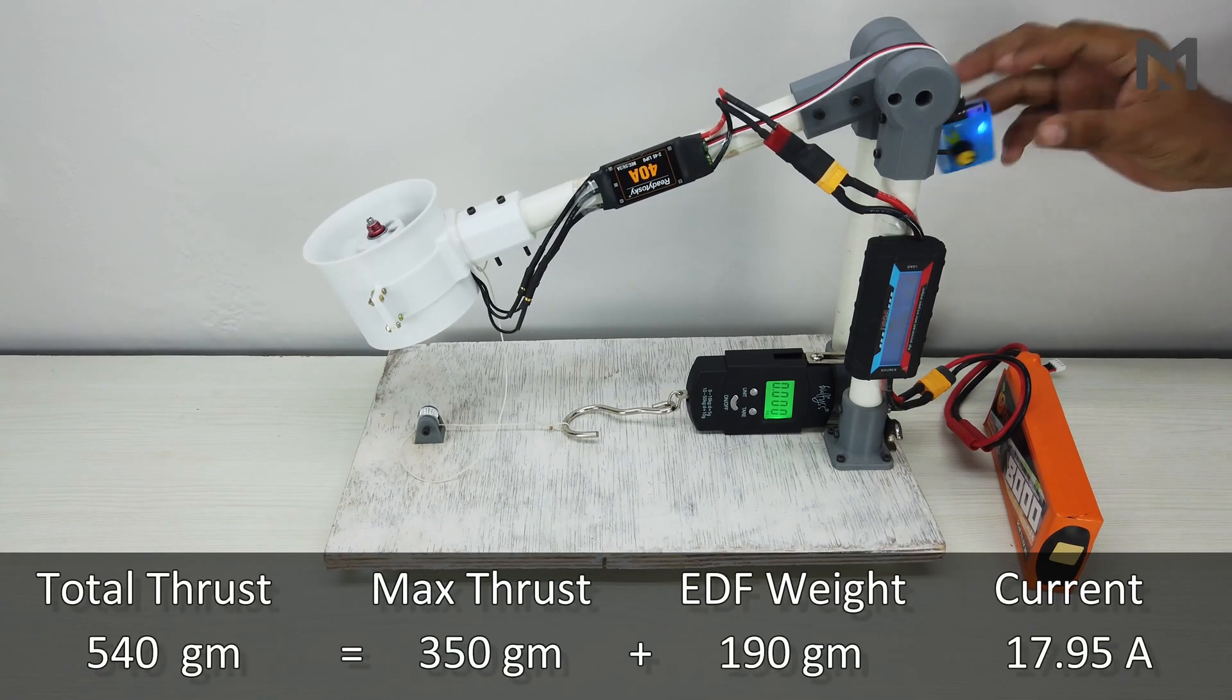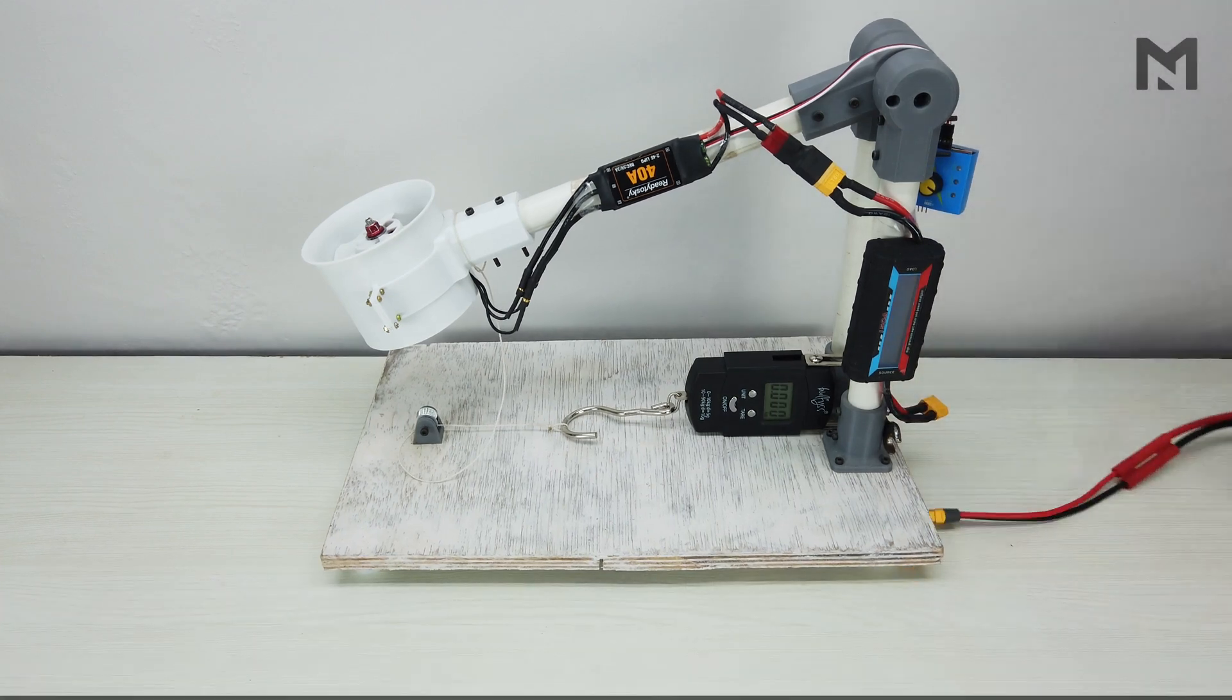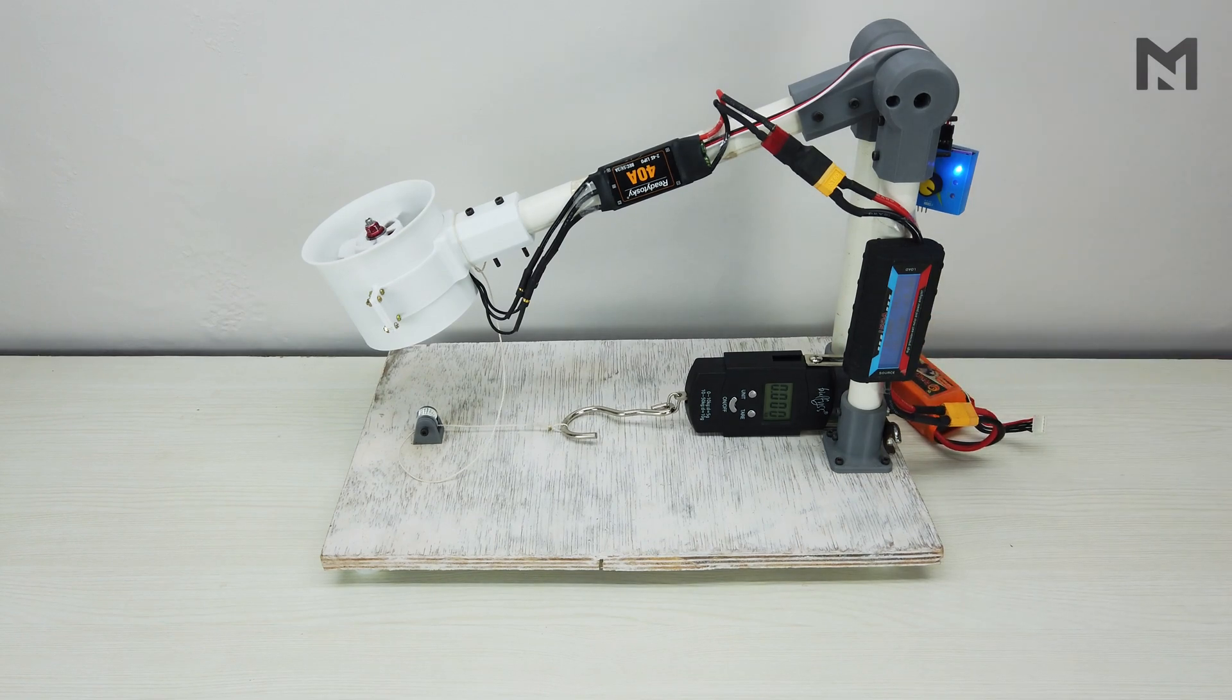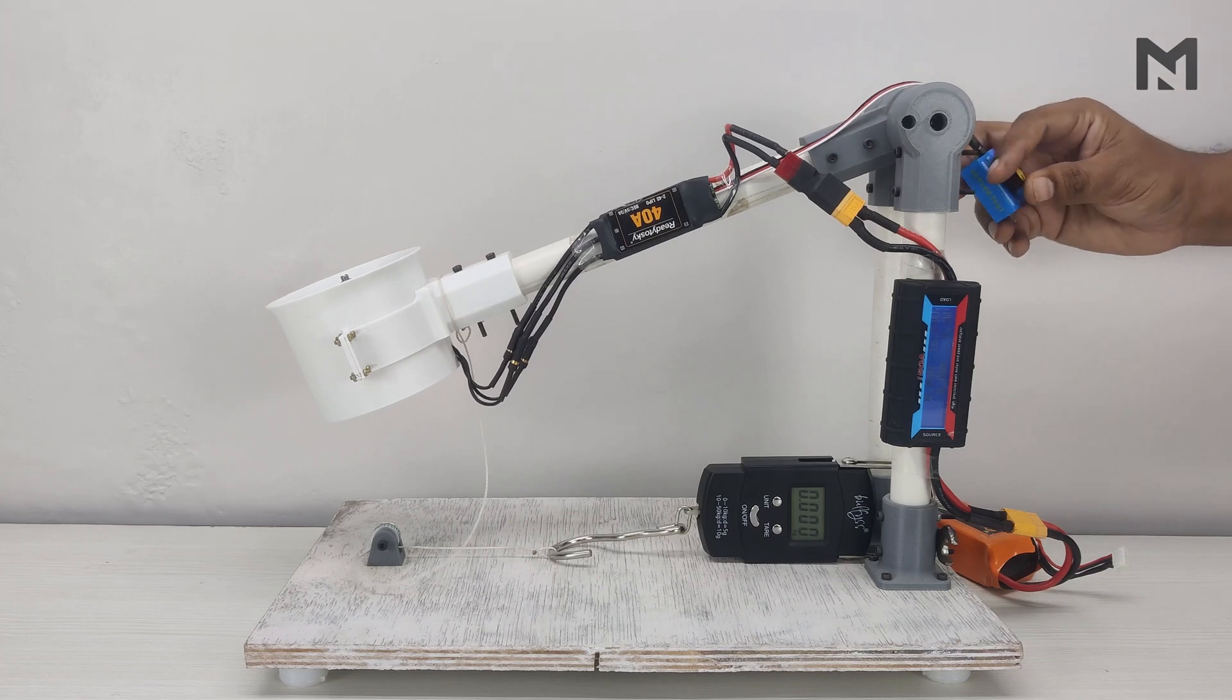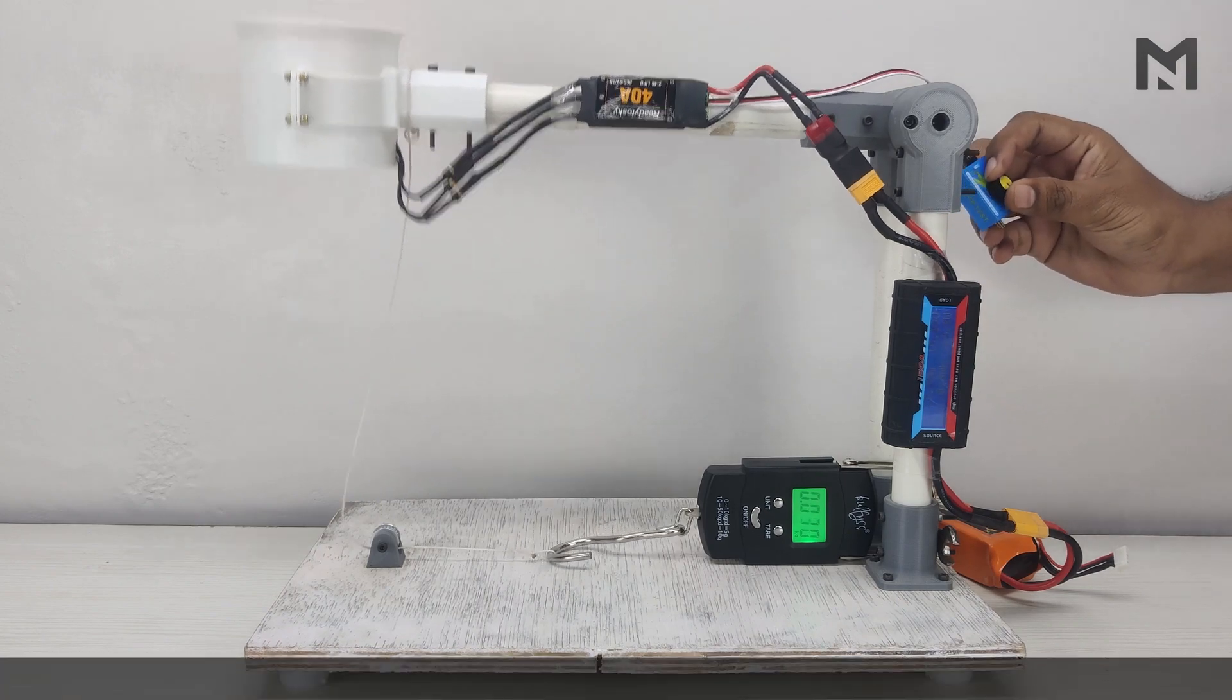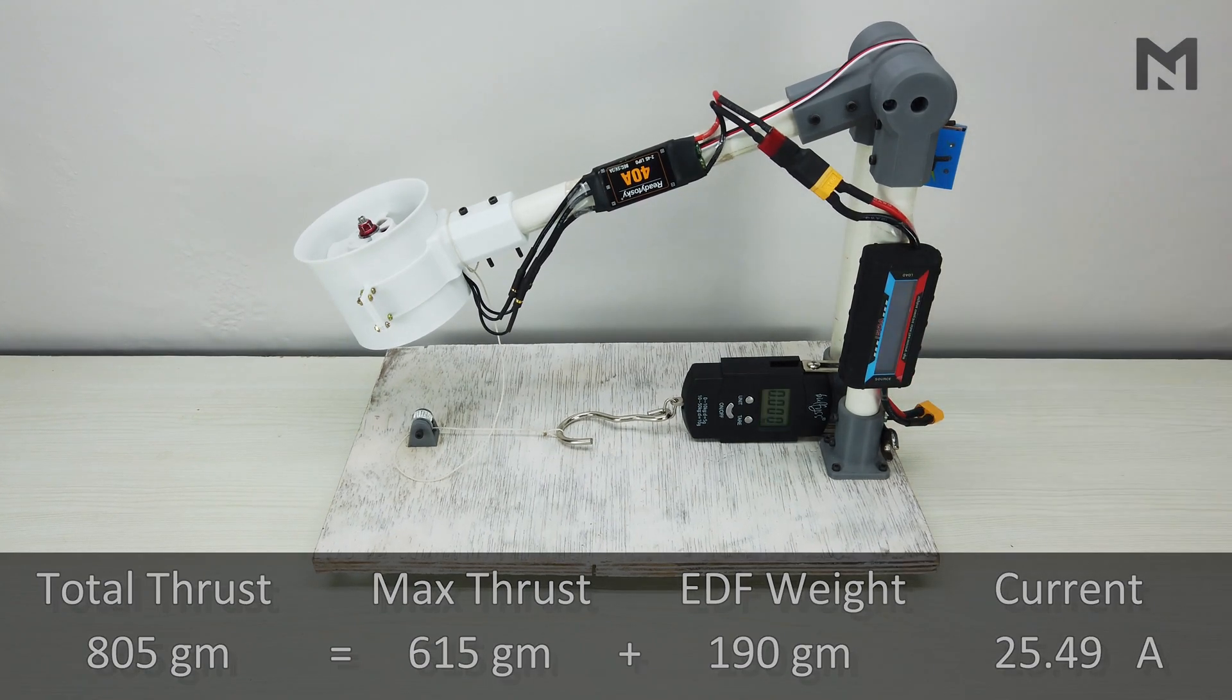The total thrust we got is 540 grams at 17.95 Amperes. Now I will swap this battery and check the thrust on a 4S battery. At 25.49 Amperes, we obtained a total thrust of 805 grams.